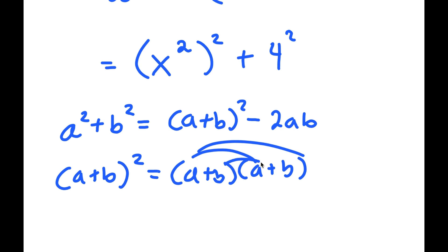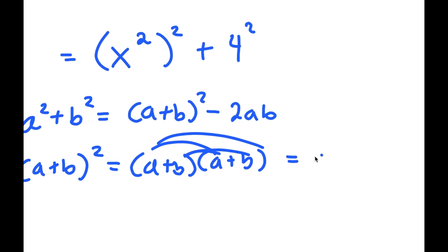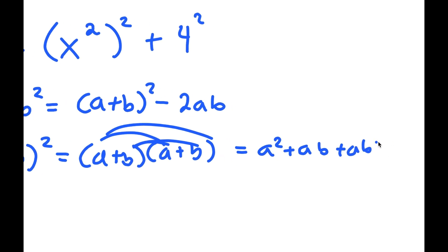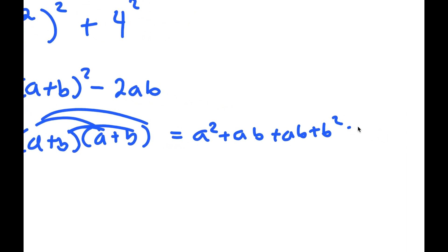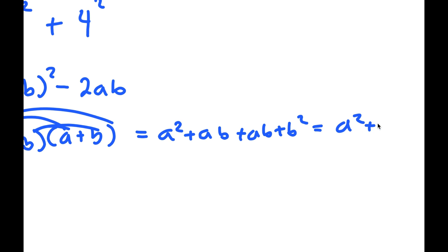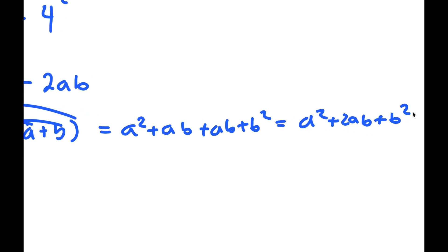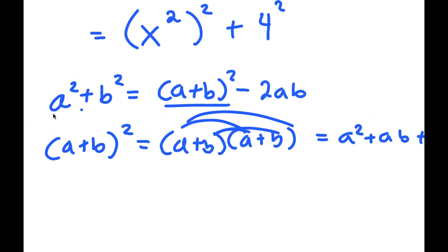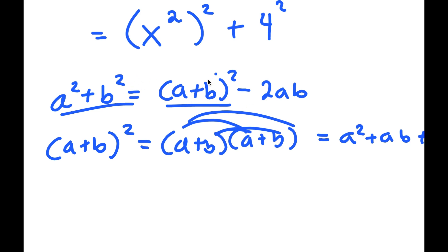Which if you distribute a, distribute b, you get a squared plus ab plus ab plus b squared. So a squared plus b squared equals a plus b squared minus 2ab.